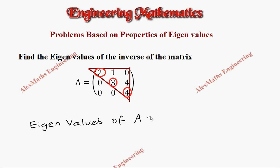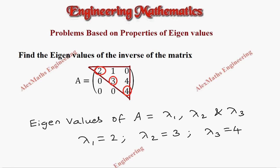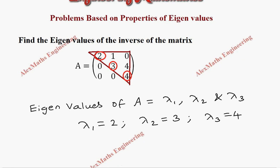Those are nothing but lambda 1 is 2, lambda 2 is 3, and lambda 3 is 4. Now they want the eigenvalues of the inverse of the matrix.